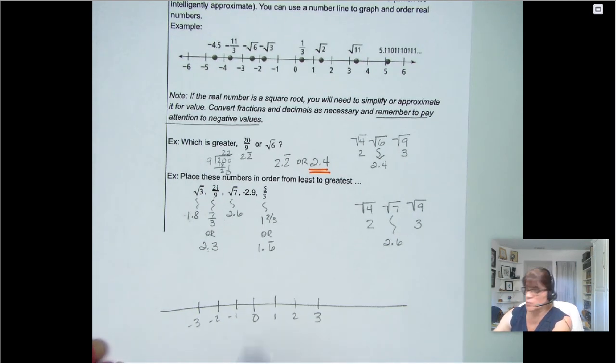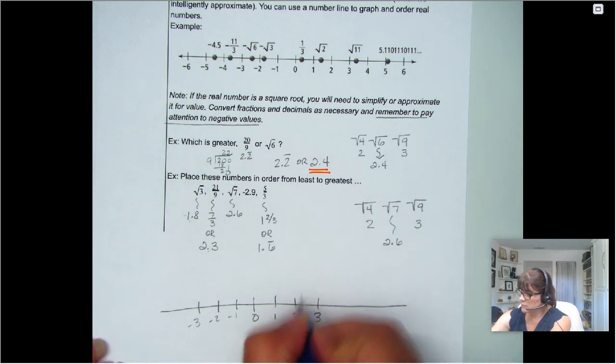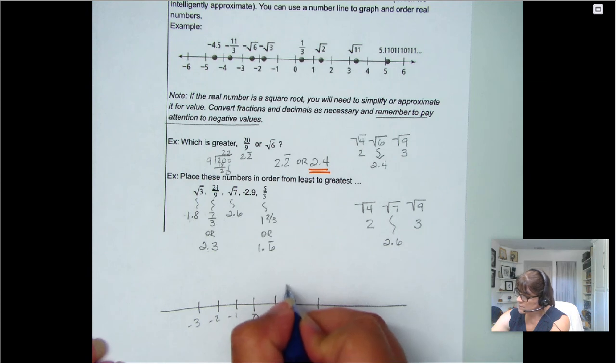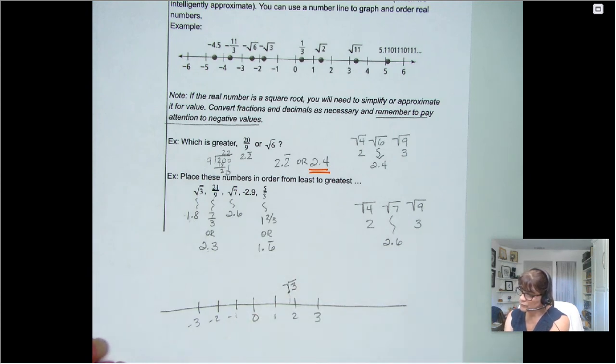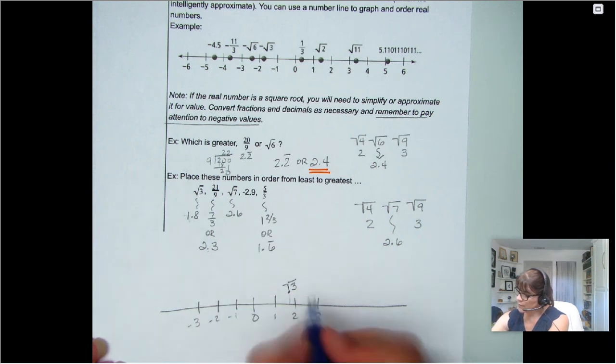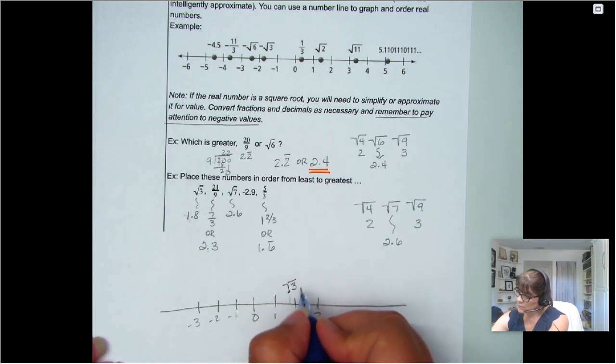So the first one, 1.8 would be almost here. And that's the square root of 3. 2.3, well, that's going to be here-ish. And that was 21 ninths.